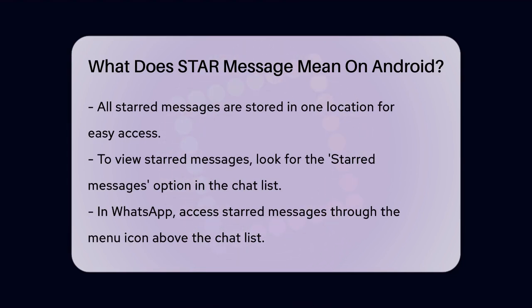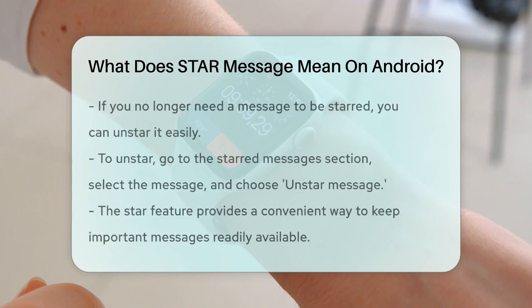To view all your starred messages, you can go to the chat list and look for the Starred Messages option. In WhatsApp, you click on the menu icon above your chats list and select Starred Messages.